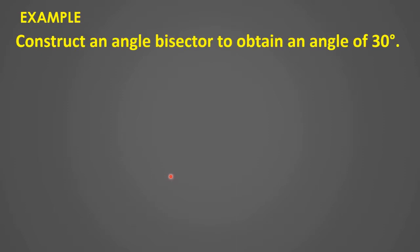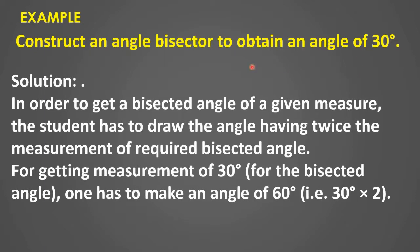Now we will see one more example: construct an angle bisector to obtain an angle of 30°. In order to get a bisected angle of a given measure, one has to draw the angle having twice the measurement of the required bisected angle. For getting 30°, one has to make an angle of 60°. First we will take an angle of 60° and then bisect it to get 30°.